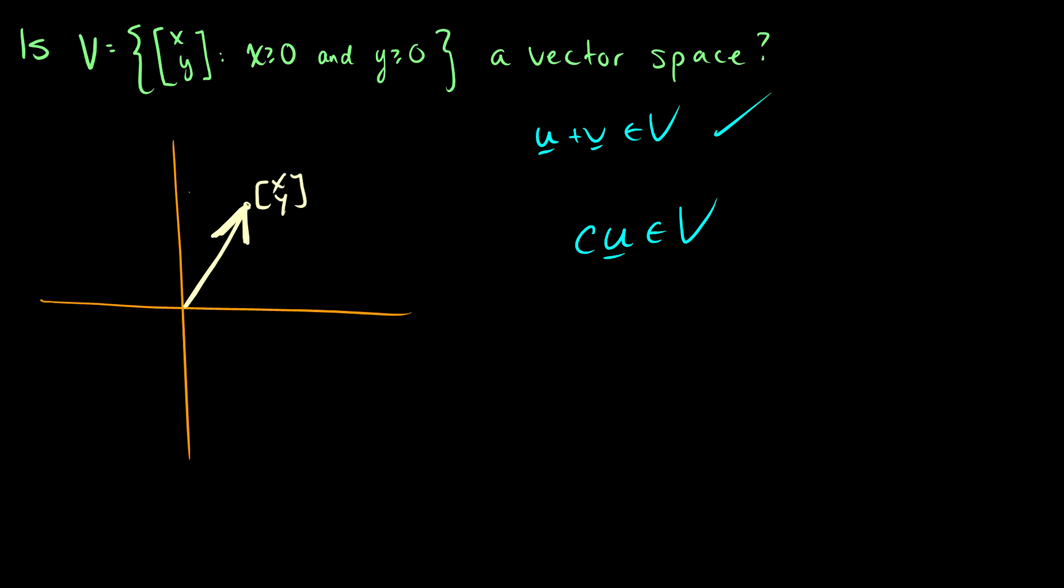But what if we take a scalar here? So what happens if we scale this by negative one? So let's take negative one x, y. Well, what happens then? Well, then we end up over here. And this isn't good, because we've exited our vector space.